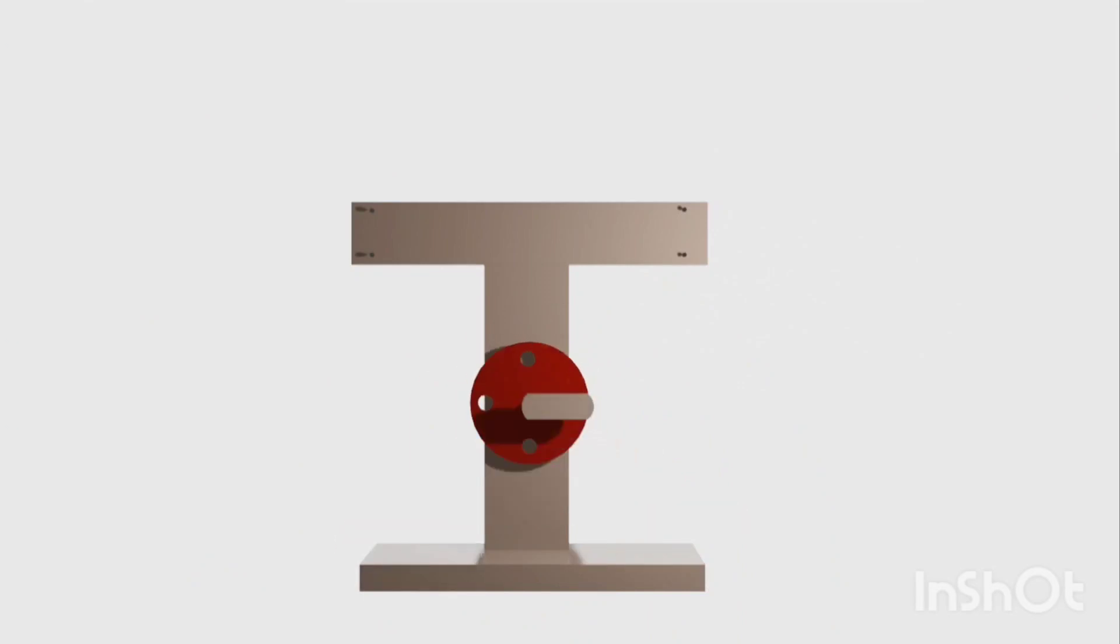Components. The Whitworth quick return mechanism consists of a crank, a slotted lever, a connecting rod, and a driving source such as an electric motor or an engine.